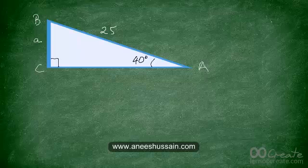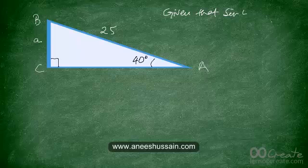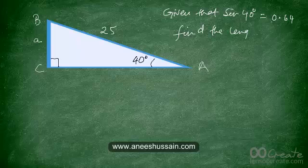Let's try another example. In triangle ABC, angle A is now 40 degrees. Given that sine of 40 degrees is equal to 0.64, find the length of BC marked with small a. Pause the video and try to solve this on your own.